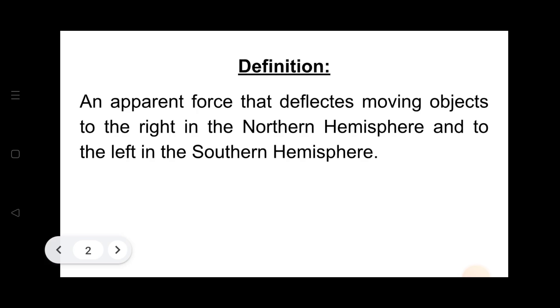The Coriolis force is not a real force like gravity or friction. Rather, it is an apparent force. This means it is a force that seems to act on moving objects, but it's actually caused by the rotation of Earth. So here is the definition: an apparent force that deflects moving objects to the right in the northern hemisphere and to the left in the southern hemisphere.